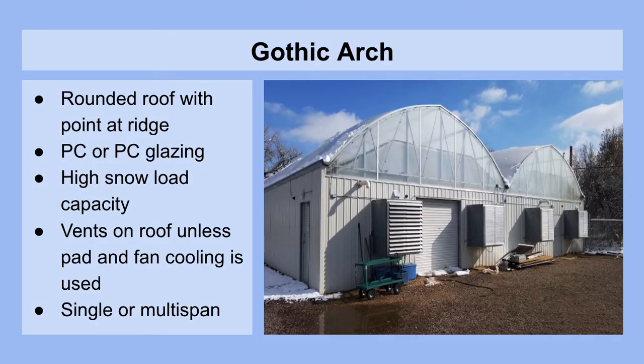Now we need to take a look at the gothic arch style greenhouse. These have a rounded roof with a point at the ridge. They can take on polycarbonate or polyethylene glazing, have high snow load capacities, and vents on the roof unless pad and fan cooling is used. They can be single or multi-span.